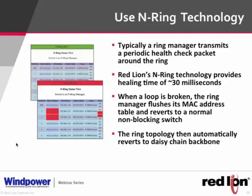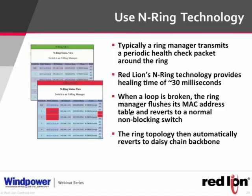The ring manager sends a health packet around the ring continuously. If it fails, the manager retries a couple of times, then at 30 milliseconds triggers healing. In-Ring also provides reporting features absent from RSTP and most ring protocols: it tells you exactly which switch and which port experienced the failure. If someone cuts a fiber cable, you don't have to log into every switch to find it — In-Ring pinpoints it. If the ring breaks, traffic continues in a chain topology until the fiber is repaired.